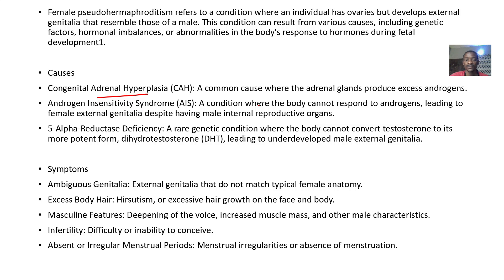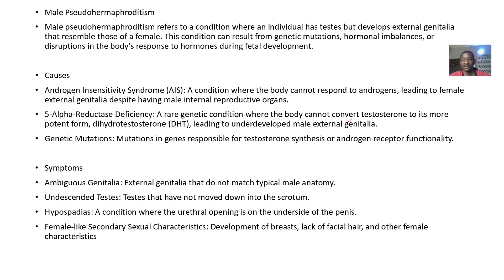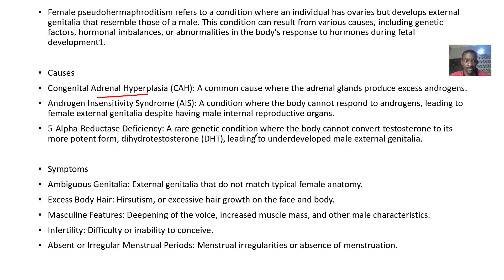Androgen insensitivity syndrome is a condition where the body cannot respond to androgens, leading towards female external genitalia despite having male internal reproductive organs — and that one falls under male pseudo-hermaphroditism. Then we have 5-alpha reductase deficiency, which is a rare genetic condition where the body cannot convert testosterone to the more potent form, dihydrotestosterone, leading to underdevelopment of male external genitalia.